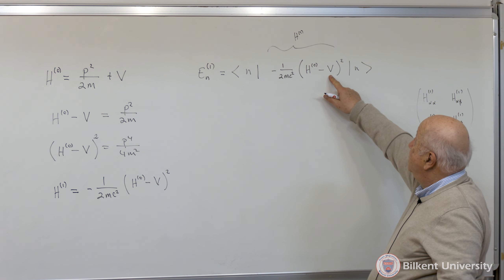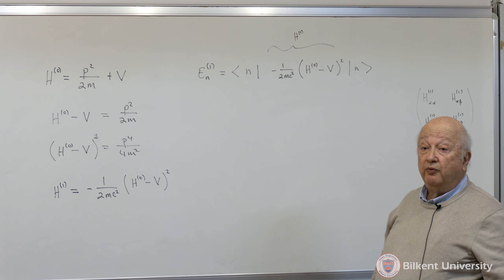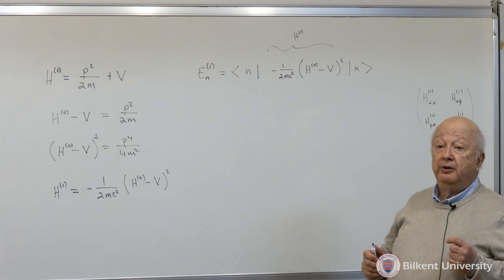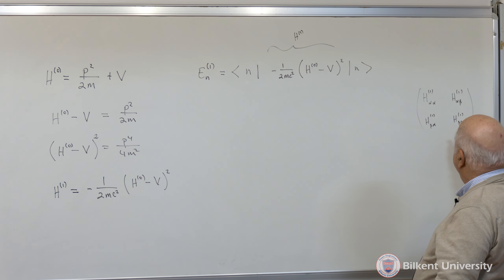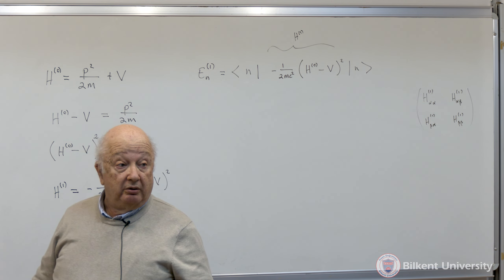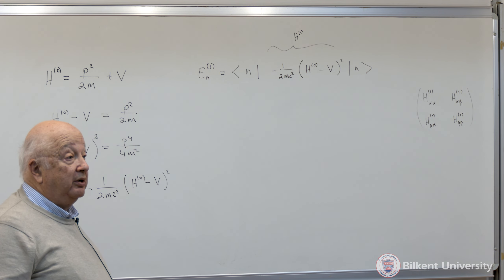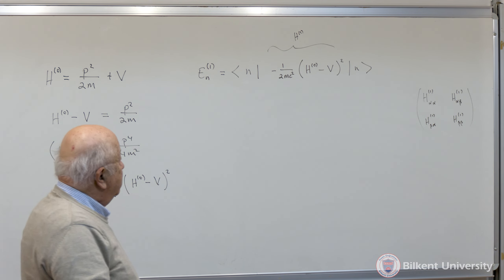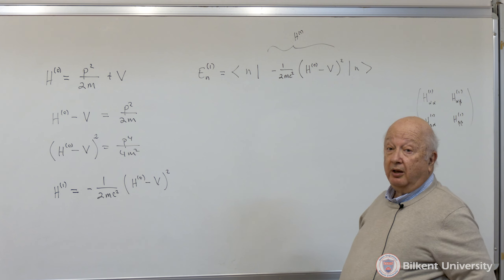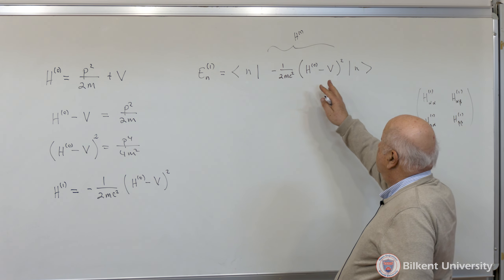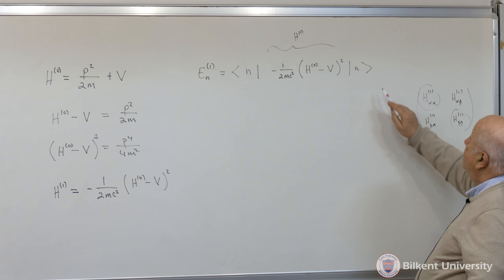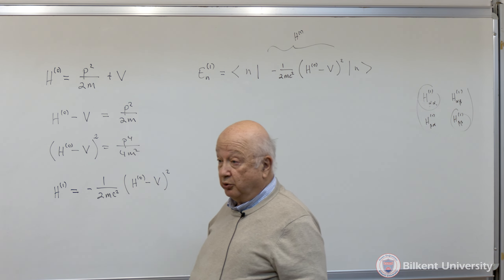We would need to find all these matrix elements and then find the eigenvalues and eigenvectors of this matrix. But it turns out that the ordinary eigenstates already diagonalize this matrix. That's because the V's are just functions of r, just radial coordinates, so they commute with the angular momentum operator. Because they commute with the angular momentum operator, the angular momentum indices do not bring in any non-diagonal elements, so I get all diagonal elements.